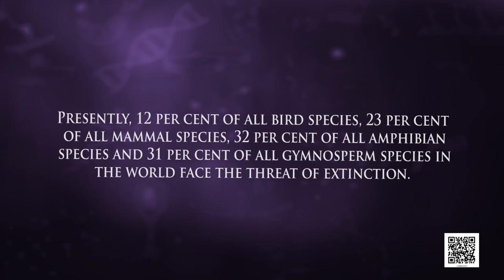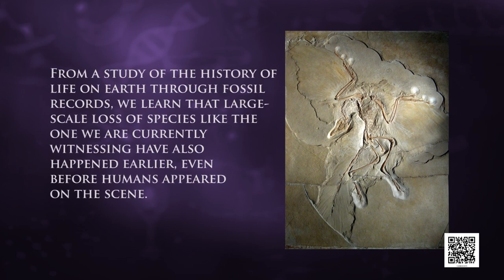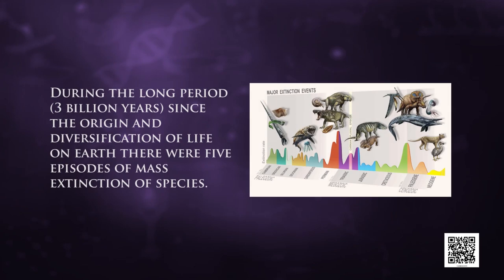Extinction across taxa is not random — some groups like amphibians appear more vulnerable to extinction. More than 15,000 species worldwide are facing the threat of extinction. Presently, 12% of all bird species, 23% of all mammalian species, 32% of all amphibian species, and 31% of all gymnosperm species face the threat of extinction. The fossil record reveals five episodes of mass extinction of species during the 3-billion-year history of life on earth. How is the sixth extinction, presently in progress, different from previous episodes?